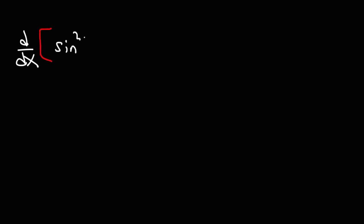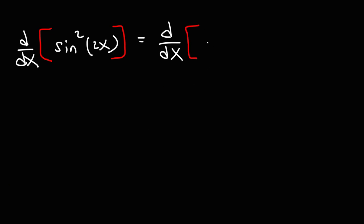Now let's work on some harder problems. Let's say we want to find the derivative of sine squared of 2x. The first thing I would recommend doing is rewriting the problem — this expression is equal to sine of 2x raised to the second power.